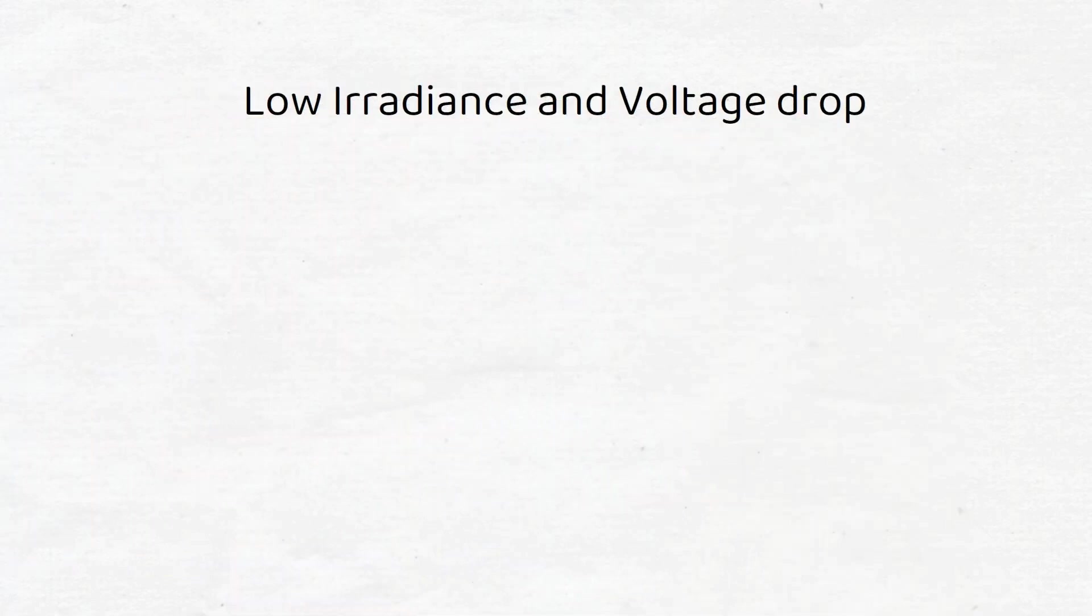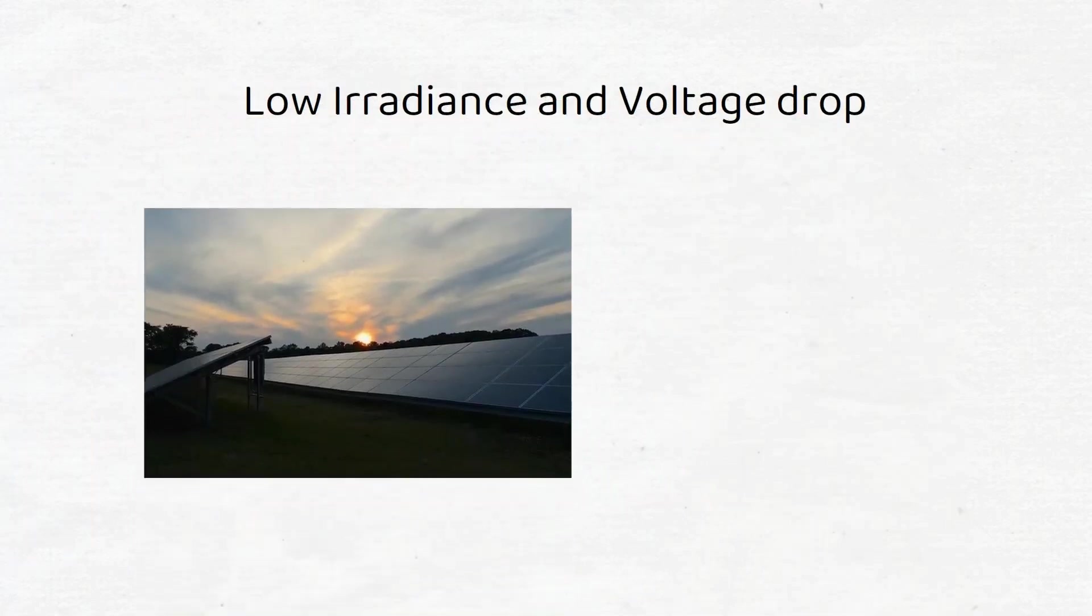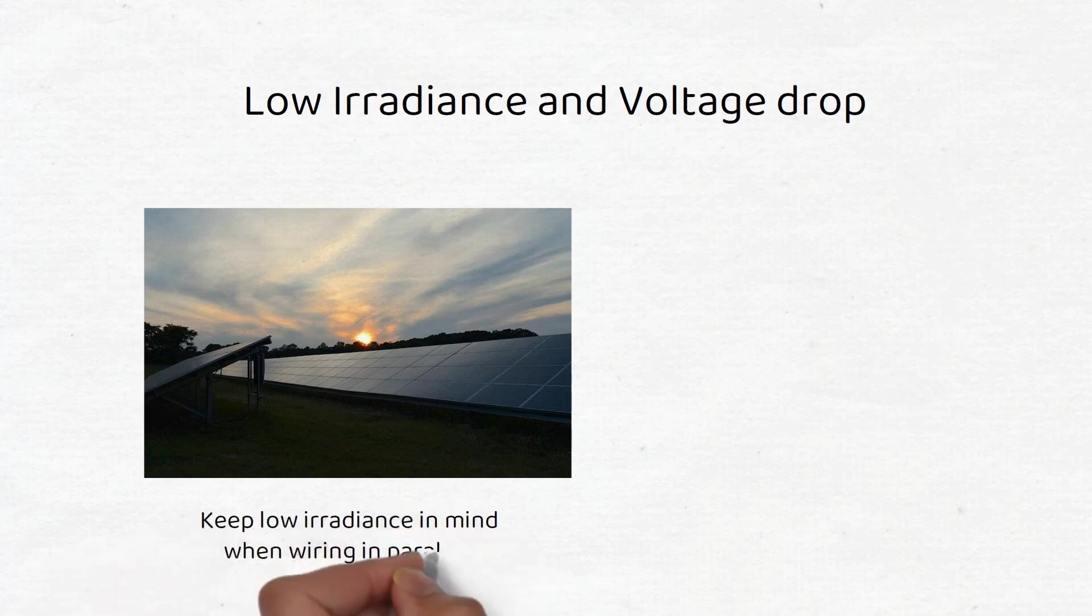If your panel experiences low irradiance in the morning and evening, the voltage might not reach the minimal threshold of your charge controller to start putting energy in the battery. Remember that a series connection adds up the voltage while the current stays the same.